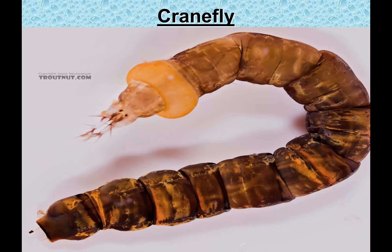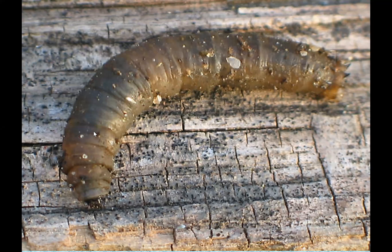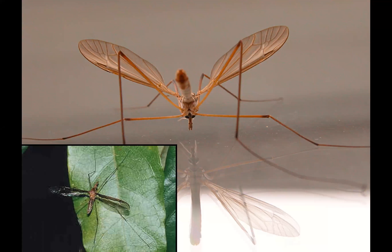Crane flies are those large mosquito-like insects with long legs you see around lights in summer — do not kill them. Crane flies are vegetarians and as adults have no mouth; they can't eat. Their only purpose is to find a mate, lay eggs, and die. As larvae in the stream, they look like little grubs or worms. They burrow into leaf packs in fall and eat their way out over winter. If you hold one up to light, you can actually see the fly it will become. They can't bite you.